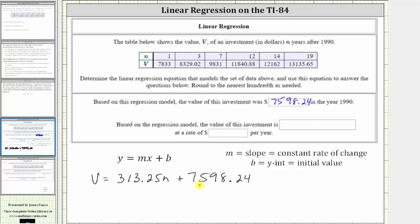Notice how if we did substitute zero for n into the equation, we would have v equals 313.25 times zero, again because n equals zero represents the year 1990, and then plus 7,598.24, which of course gives us the same value of $7,598.24.